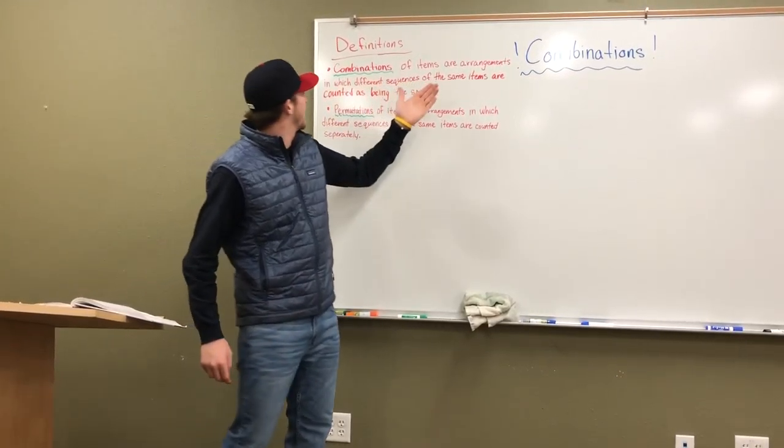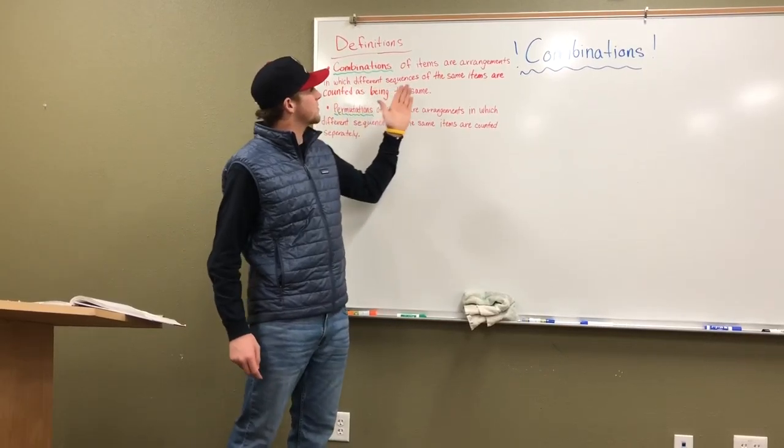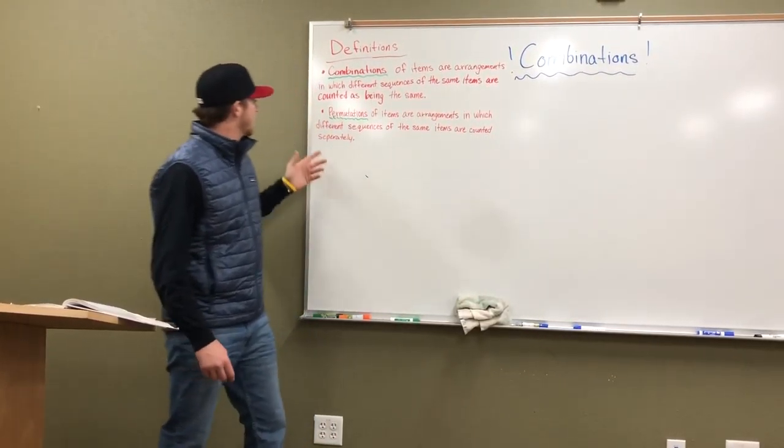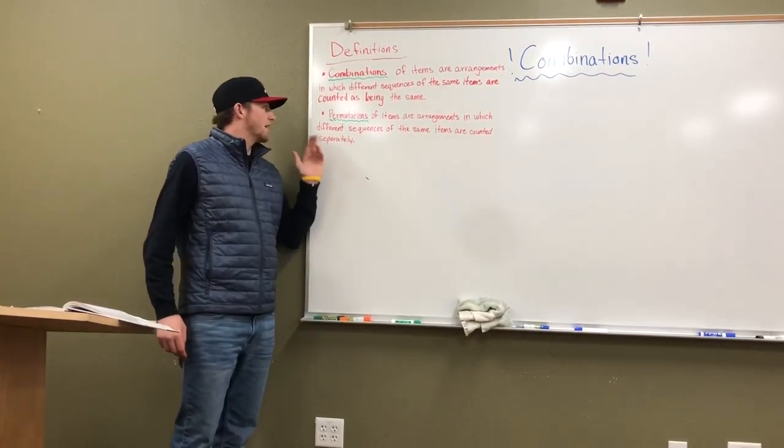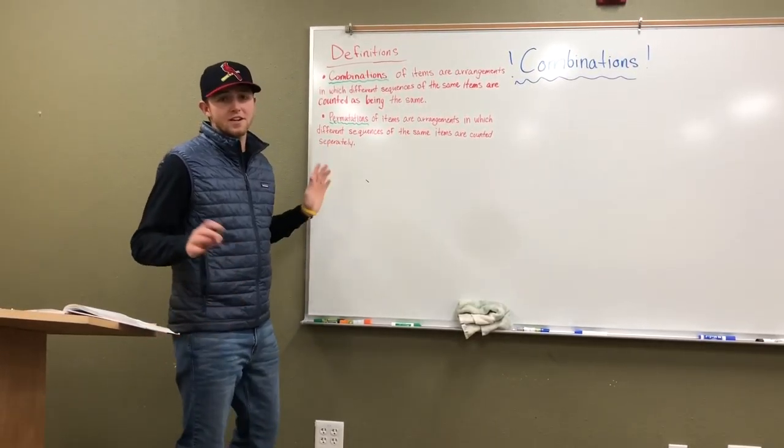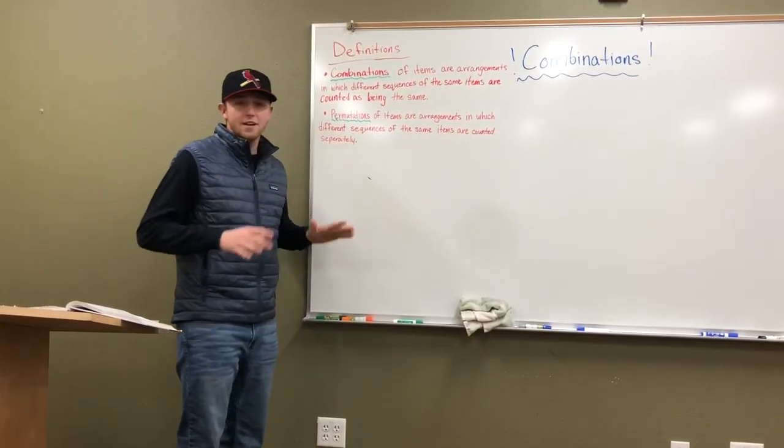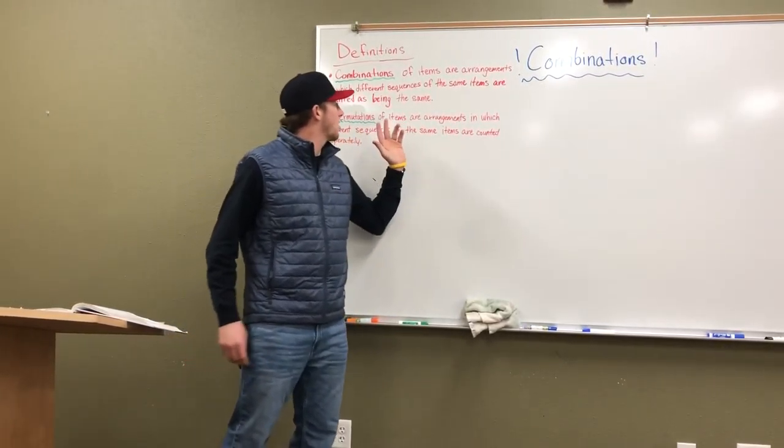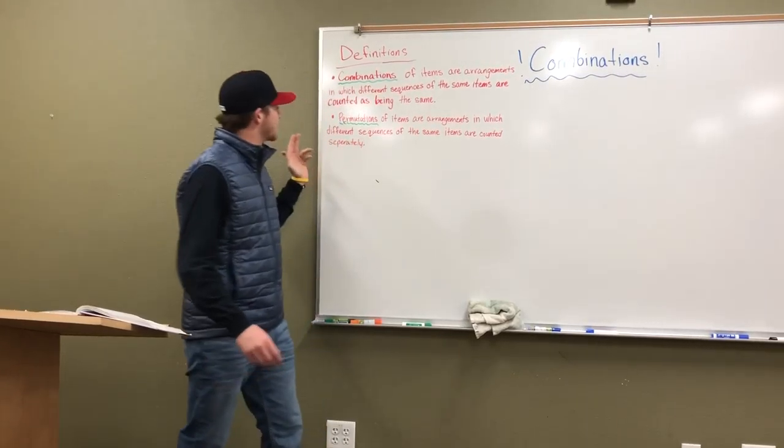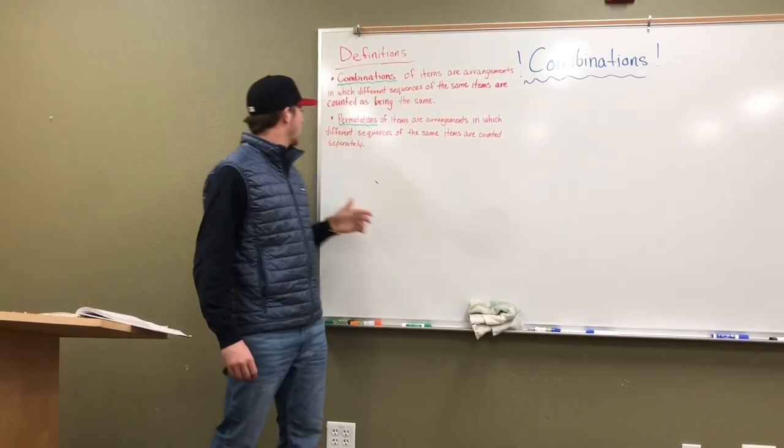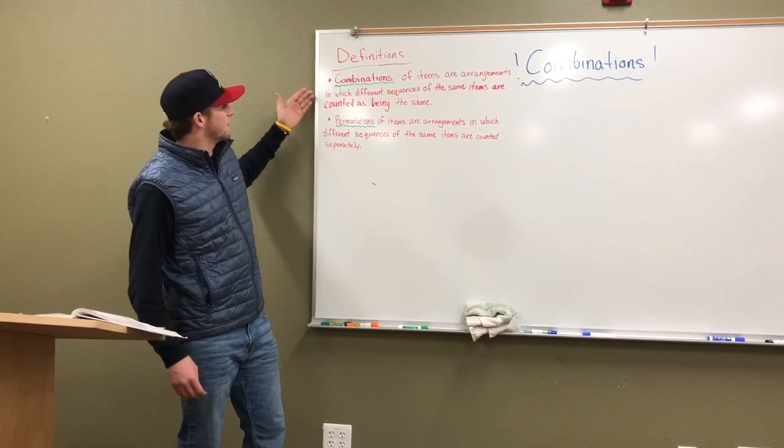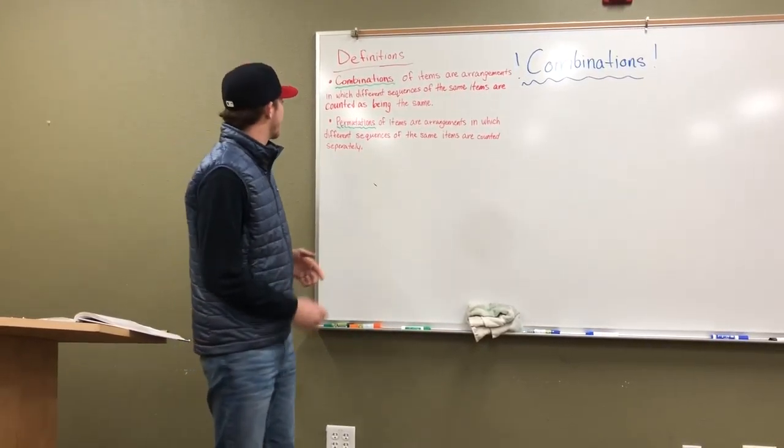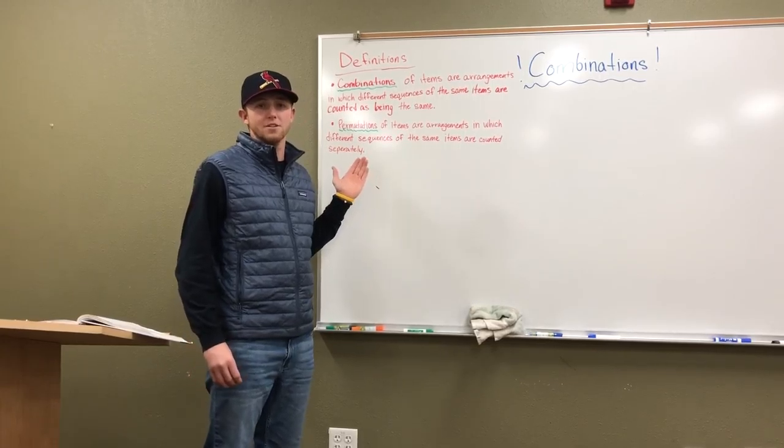Combinations of items are arrangements in which different sequences of the same items are counted as being the same. For this next definition, it says permutations, and I know what you guys are thinking, it's combinations, Clayton, but listen, permutations of items are arrangements in which different sequences of the same items are counted separately. So you can see that they are very similar, and for really understanding combinations, I think it is important to understand permutations.